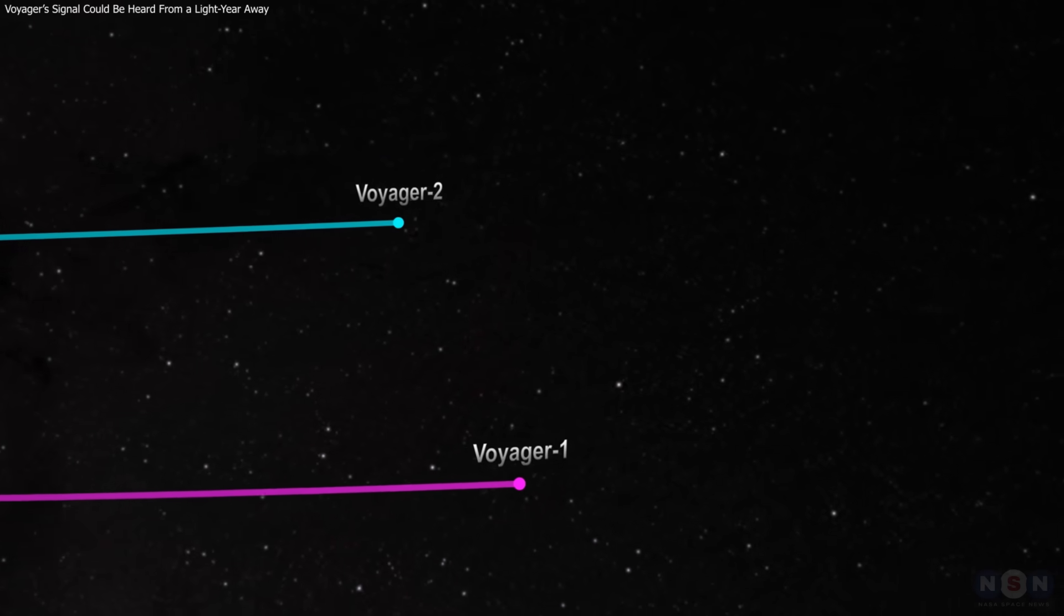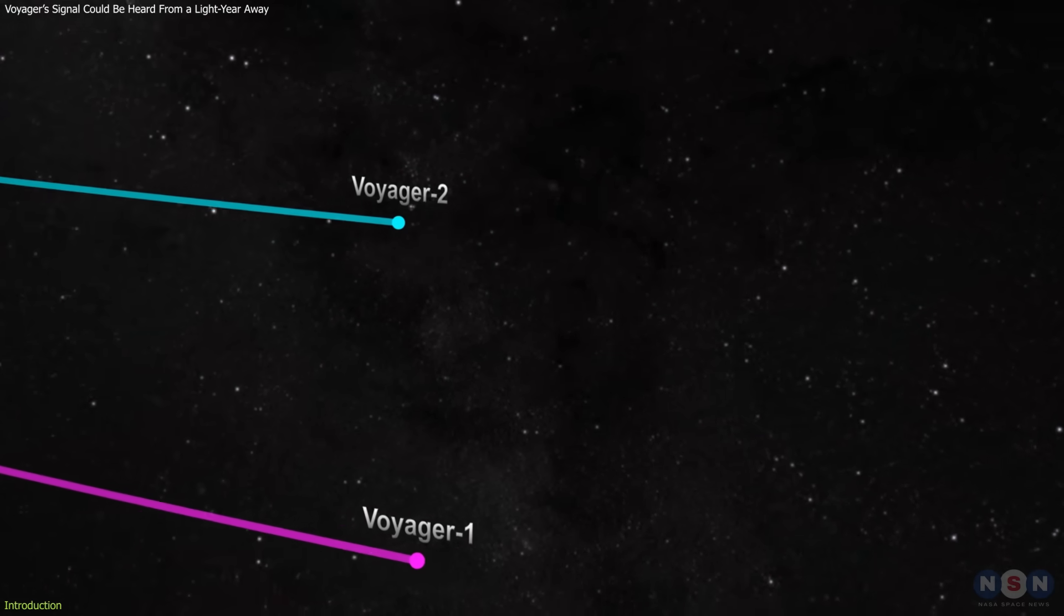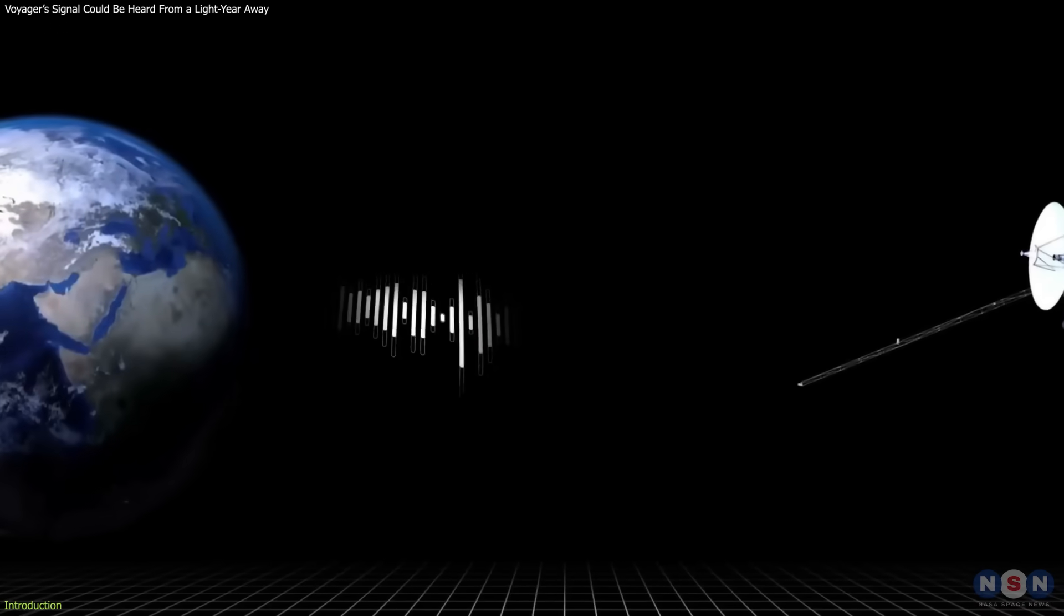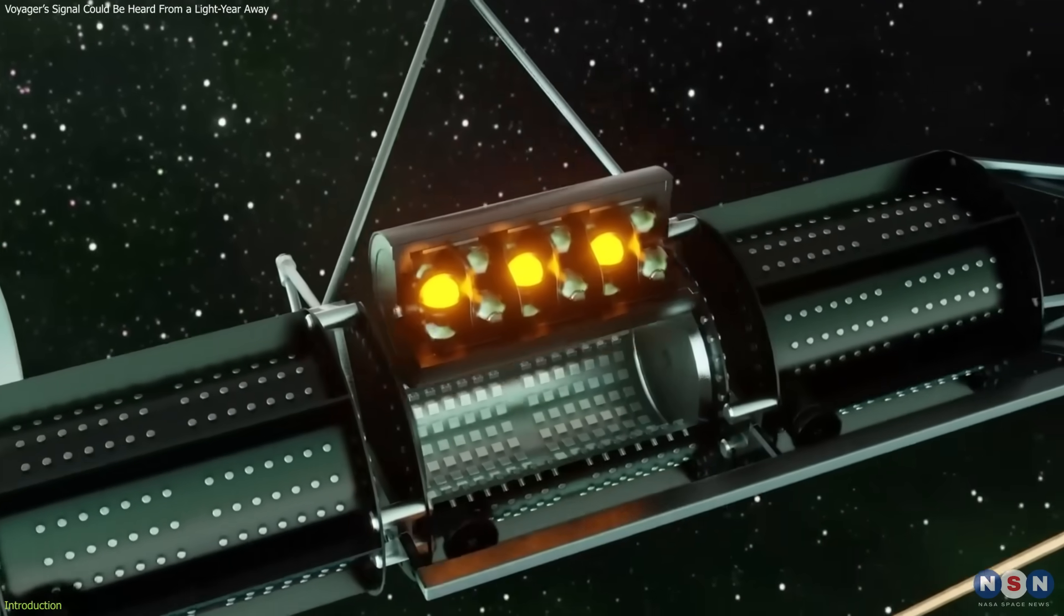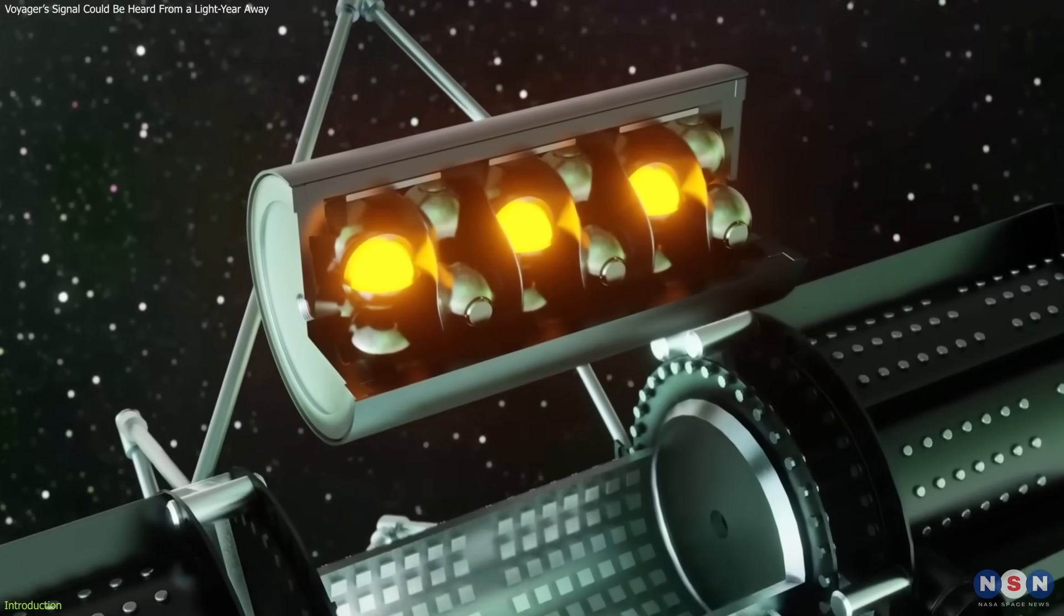Voyager 1 and 2, traveling through space for nearly five decades, are still sending signals despite using just 23 watts of power, roughly the energy of a microwave bulb.